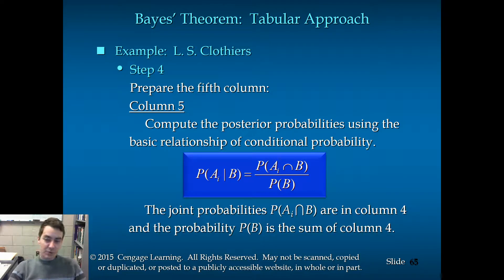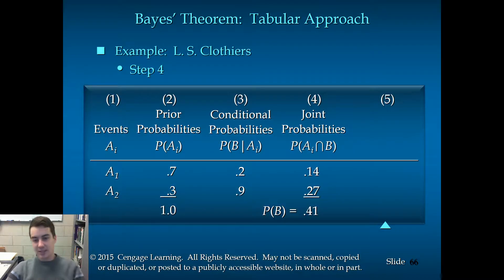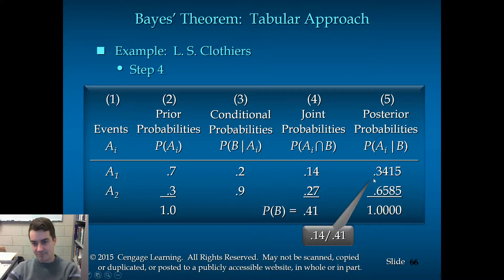Step four. We're computing the posterior probabilities using the basic relationship of conditional probability. We take the probabilities A intersect B divided by the probability of B. Which A intersect B are the joint probabilities in column four. And then probability of B we just computed. It's the sum of the items in column four. So, what that means is we simply take this 0.14 and divide it by 0.41. And that gives us about a third. 0.27 divided by 0.41 is about two thirds. So, 34% and 66%, which means we now have 34%, 66% chance, relatively speaking, for A1 and A2. So, these are our new probabilities. We now know that the probability has dropped of the bad news from 70% to 34%.